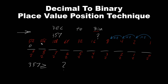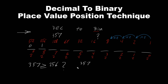Now what about 256? Does 357 greater than or equal 256? The answer is yes — in other words, when we subtract 357 minus 256, we don't get a negative value. Therefore, this is on. Now what is our new value? So 357 minus 256 is 101. Now this is our new value that we have to compare.